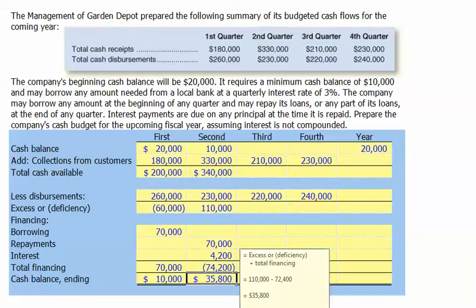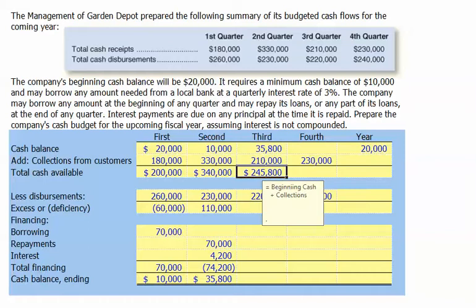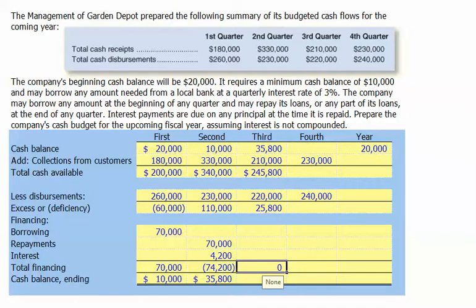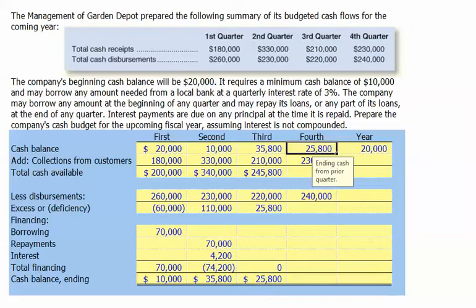Our ending balance for the second quarter is our beginning balance for the third quarter. We add to that $35,800 the $210,000 collected from customers, giving us $245,800 available. Once we disburse $220,000, we're left with $25,800. Since we have excess cash, we don't need to borrow, and there are no repayments, so financing cash flows for the third quarter are zero, and our ending third quarter balance is $25,800.